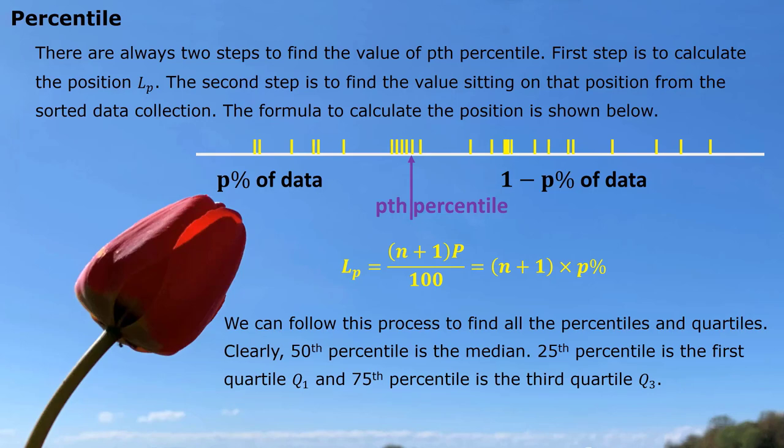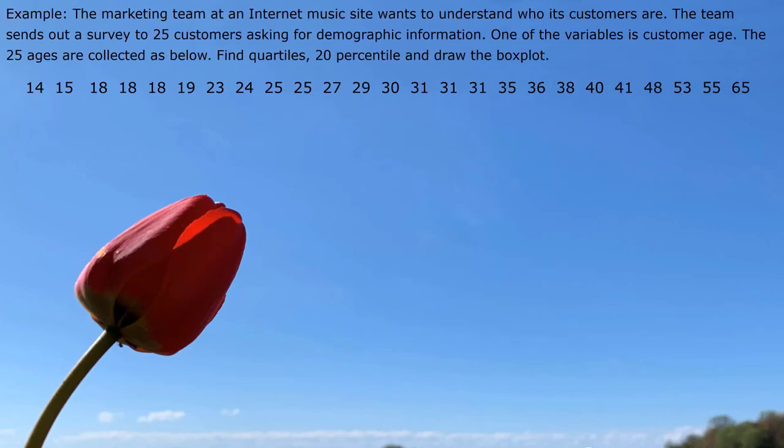We can follow this process to find all the percentile and the quartiles. Clearly, 50th percentile is the median, 25th percentile is the first quartile, and 75th percentile is the third quartile. So, no matter which one, either median quartile or any percentiles, they can all follow these two steps being figured out.